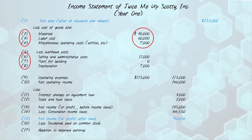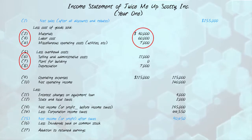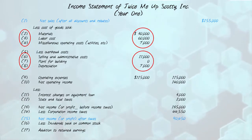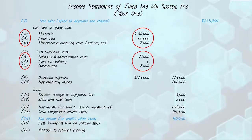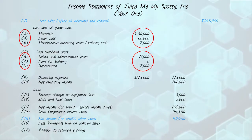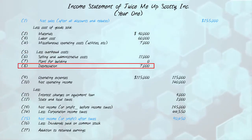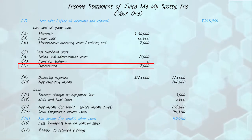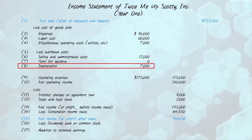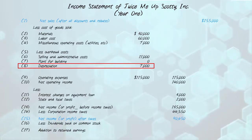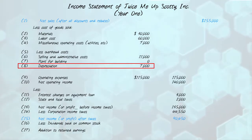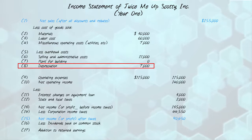For startup capital, you borrow twenty thousand dollars from the bank at ten percent interest. You kick in another thirty thousand dollars of your own savings that had been earning you fifteen hundred dollars annually in interest income from your portfolio bond investments. You also kick out the tenant in the storefront that you own to use it for your own business — a tenant who was paying you eight hundred dollars in rent per month.